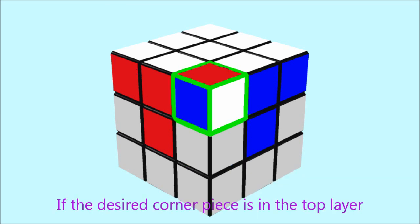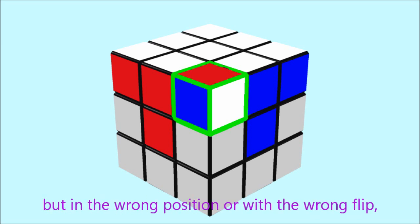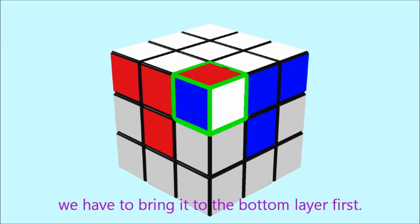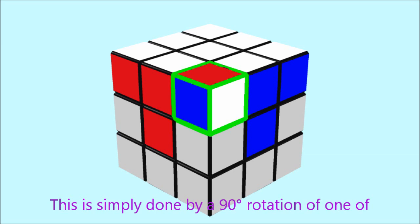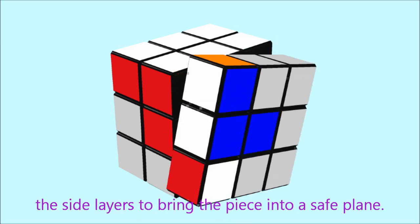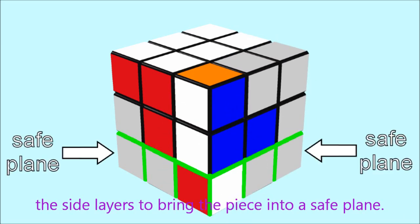If the desired corner piece is in the top layer but in the wrong position or with the wrong flip, we have to bring it to the bottom layer first. This is simply done by a 90 degree rotation of one of the side layers to bring the piece into the same plane.